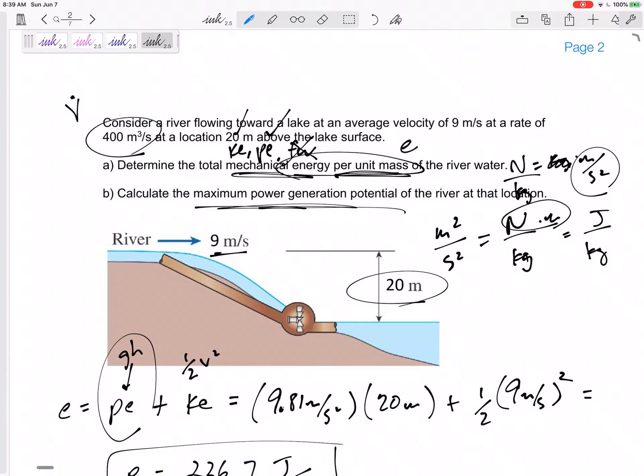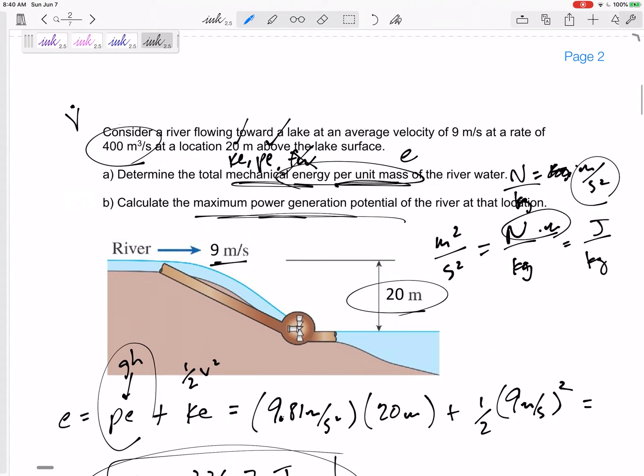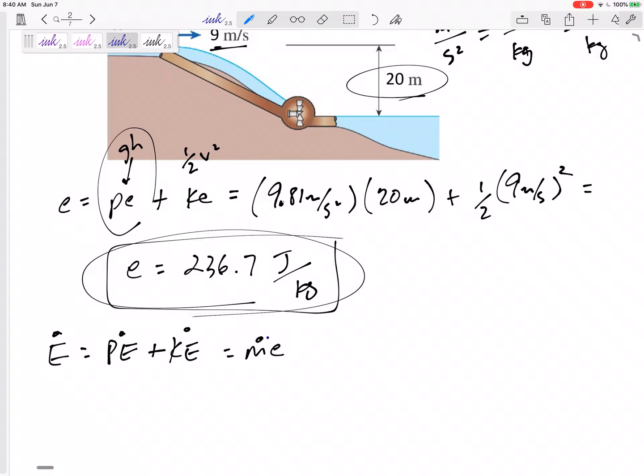Okay, then it asks for the, okay, what about the maximum power potential energy for the river, or that location? We could redo all of this, and we could say this E dot is PE dot plus KE dot, or we can just take this and multiply it times M dot. Alright, this is M dot times lowercase e. We can just multiply this times M dot times lowercase e, and so that's what I think I'm going to do. Here, M dot is, did they give us M dot? No. Did they give us M dot? No. They gave us V dot.